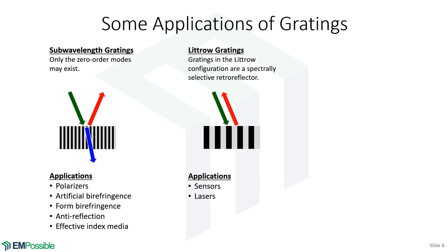There is the Littrow configuration. Here we have incident light, and what we're interested in is the plus-one order diffracted mode that reflects in the same direction as the incident wave. So it's acting like a mirror, but this configuration makes it a very spectrally selective mirror. We can use it as a mirror and as a filter at the same time — for example, locking a laser by putting these spectrally selective mirrors on either side.